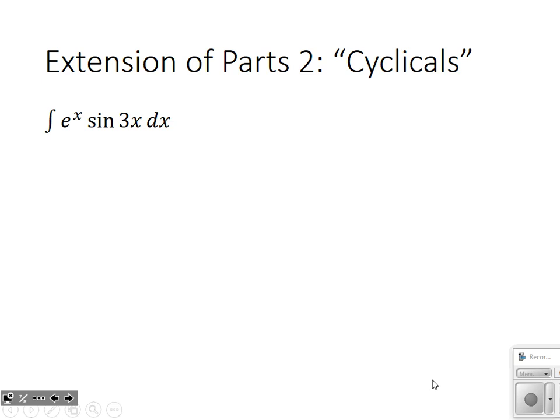Another extension is what I call cyclicals. This applies when neither part will differentiate to zero — the tabular method won't work — and the remaining integral after one round of integration by parts is no easier than the original. For example, the integral of e^x sin(3x) dx. We run through integration by parts twice and look for a cyclical result.